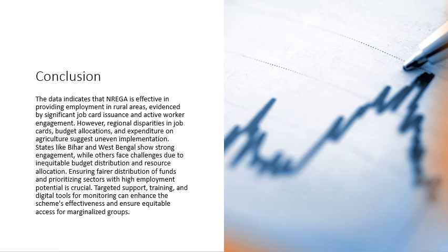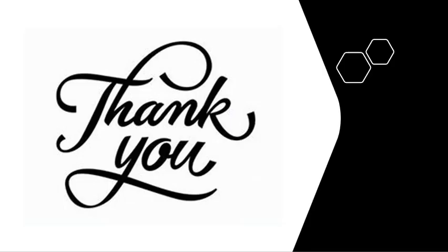The data shows NREGA is effectively providing employment in rural areas as evidenced by significant job cards issued. However, disparities in job card distribution, budget allocation, and expenditure reflect uneven implementation. States like Bihar and West Bengal show strong engagement, while inequitable budget distribution and resource allocation remain challenges. Targeted support and training are recommended to improve scheme effectiveness and equitable access for marginalized groups.